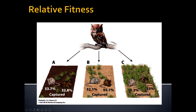If you have a fitness level of zero, that essentially means you cannot reproduce — either you're dead or you're sterile. A fitness level between zero and one means you're still doing okay. If you have a 0.9, you're not quite as good as the most fit phenotype, but you're still doing fairly well.